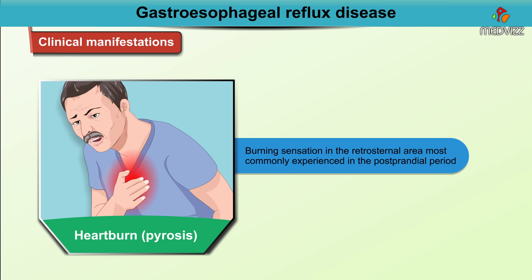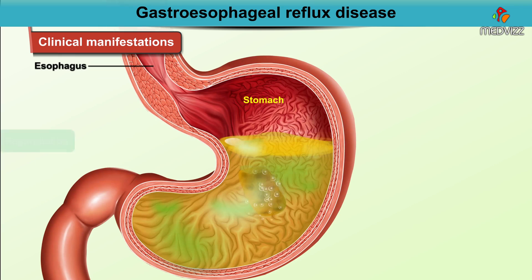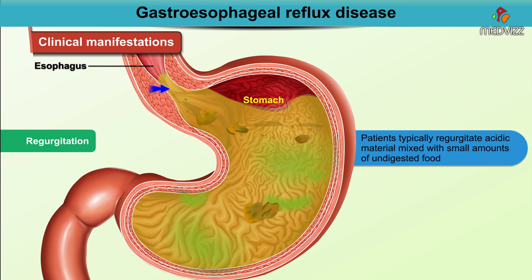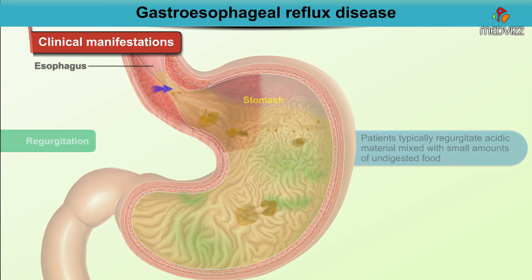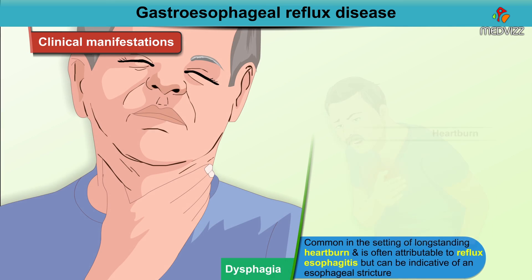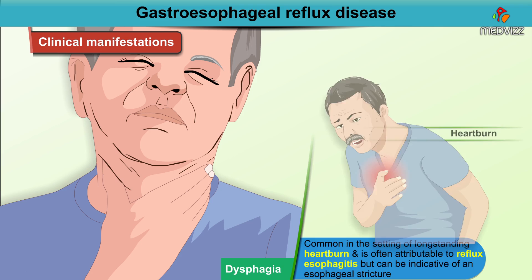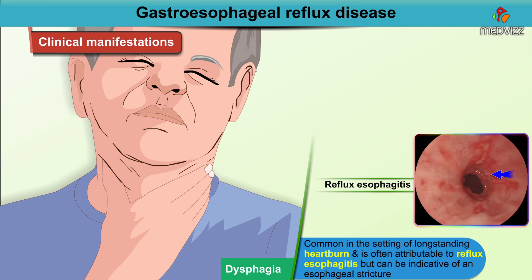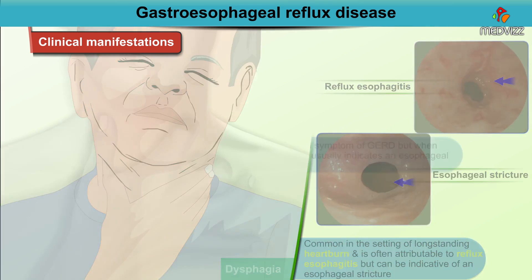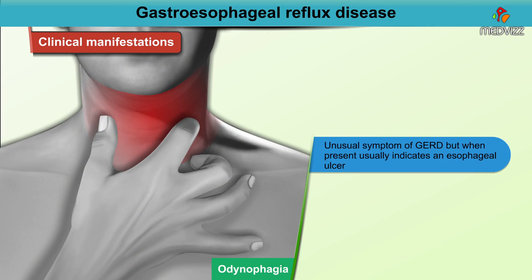The classic symptoms of GERD are heartburn, called pyrosis, and regurgitation. Heartburn is typically described as a burning sensation within the retrosternal area, most commonly experienced in the postprandial period. With regurgitation, patients typically regurgitate acidic material mixed with small amounts of undigested food. Dysphagia is common in the setting of long-standing heartburn and is often attributable to reflux esophagitis, but can also be indicative of an esophageal stricture.